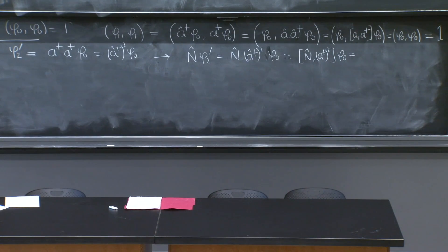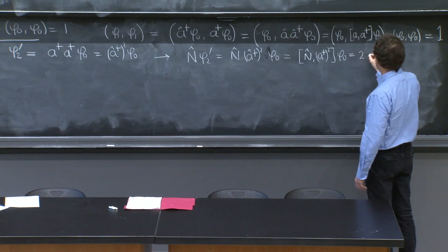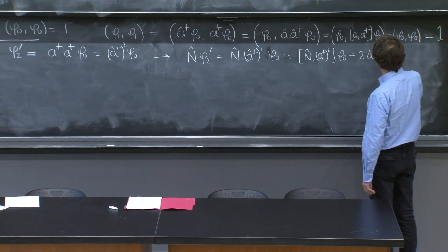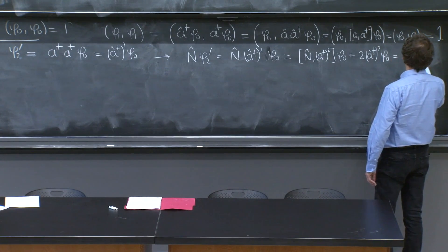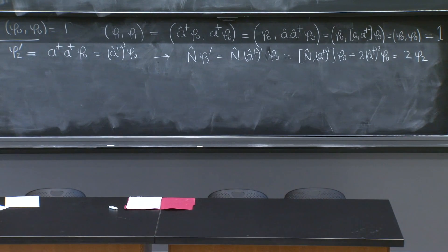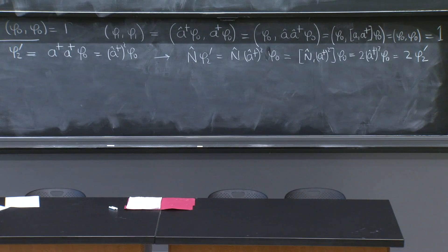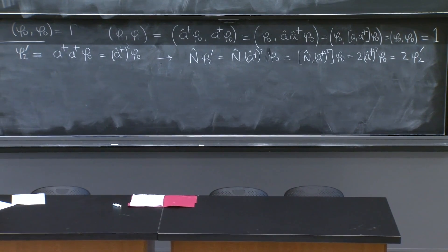Again, by now you know I should replace this by a commutator because n hat kills the phi_0. So n hat with a dagger squared phi_0. And that commutator has been done. It's 2 times a hat dagger squared, 2 times a dagger squared on phi_0, which is 2 phi_2 prime. That's what we call the state phi_2 prime. So again, it is an energy eigenstate.